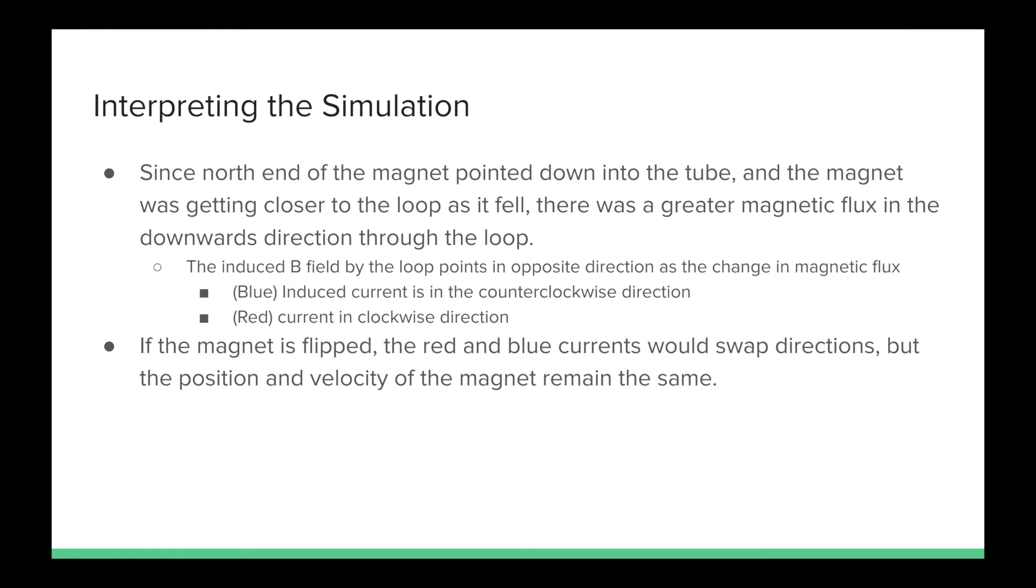The induced B-field by the loop points in the opposite direction as the change in the magnetic flux, which results in the induced current shown by the blue being in the counterclockwise direction, while the red current is in the clockwise direction.